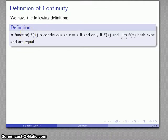I'm going to take a function, f of x, and it's going to be continuous at a particular point if and only if the function value and the limit of the function as x gets close to a are both existent quantities and are equal to each other.